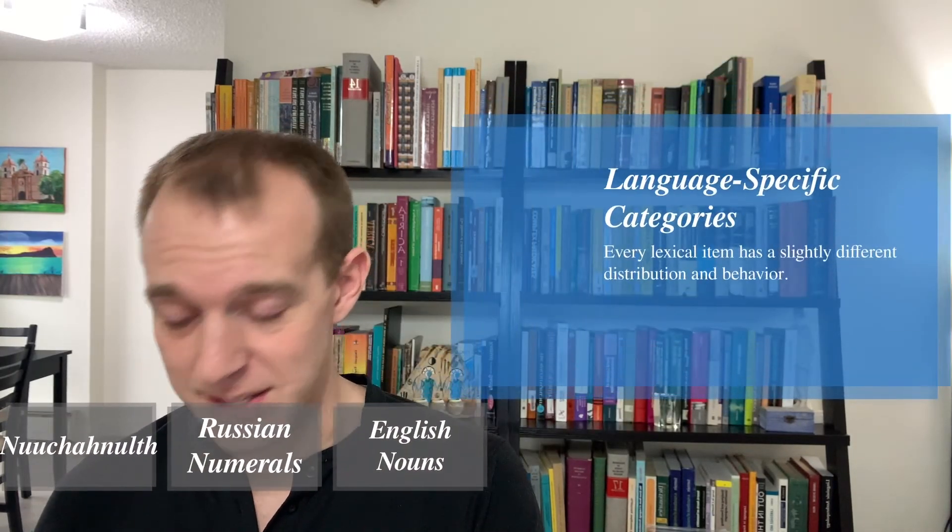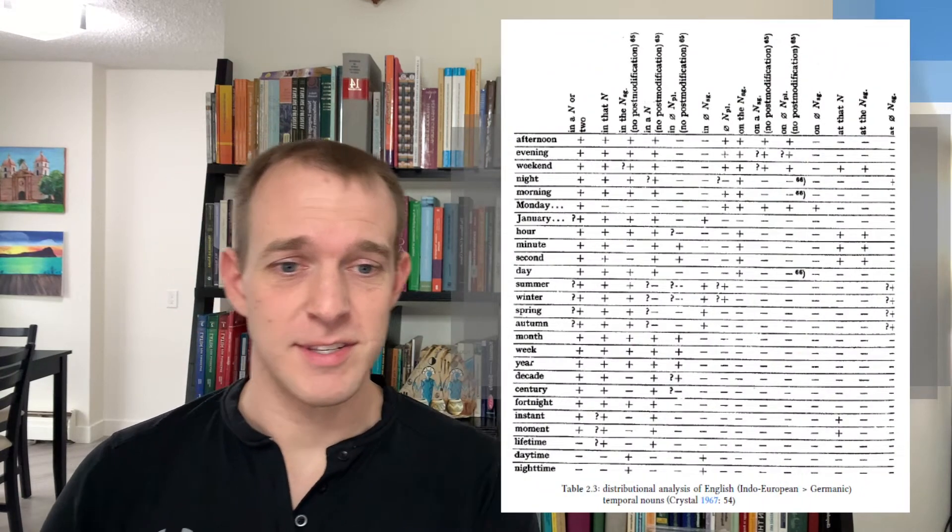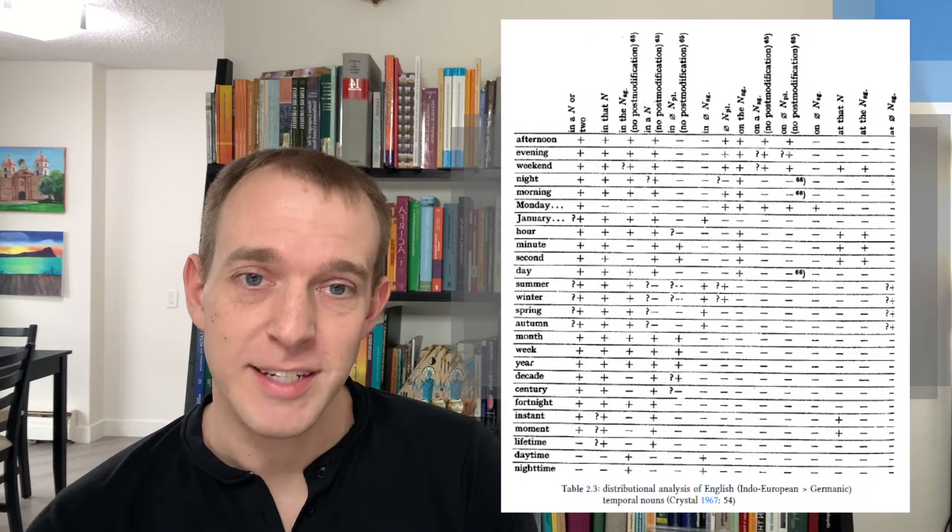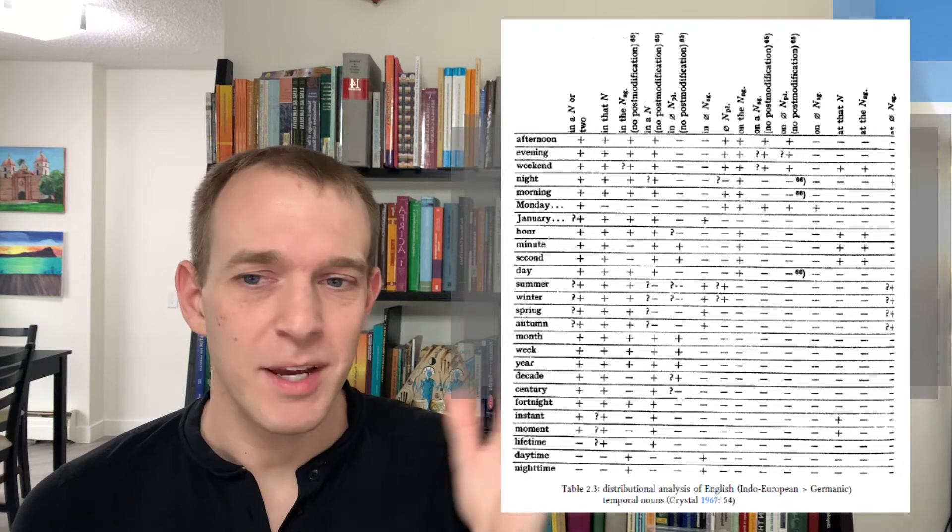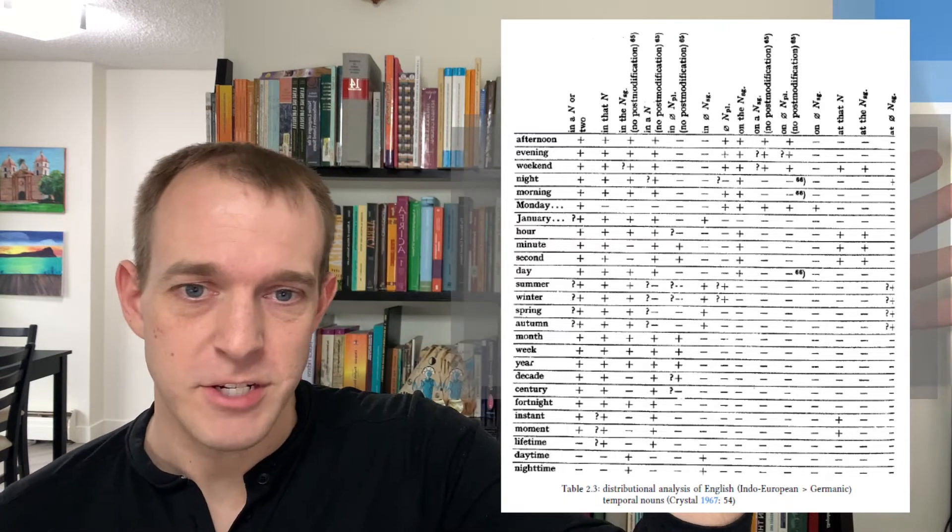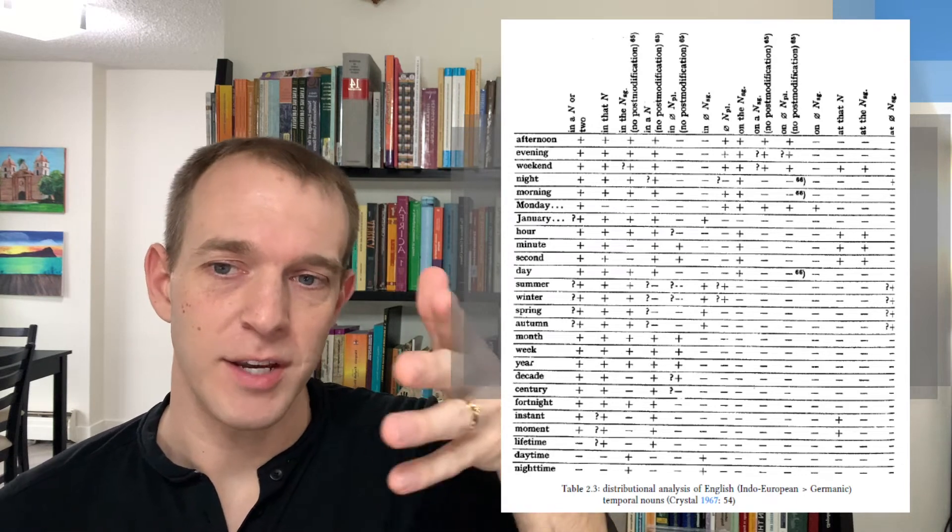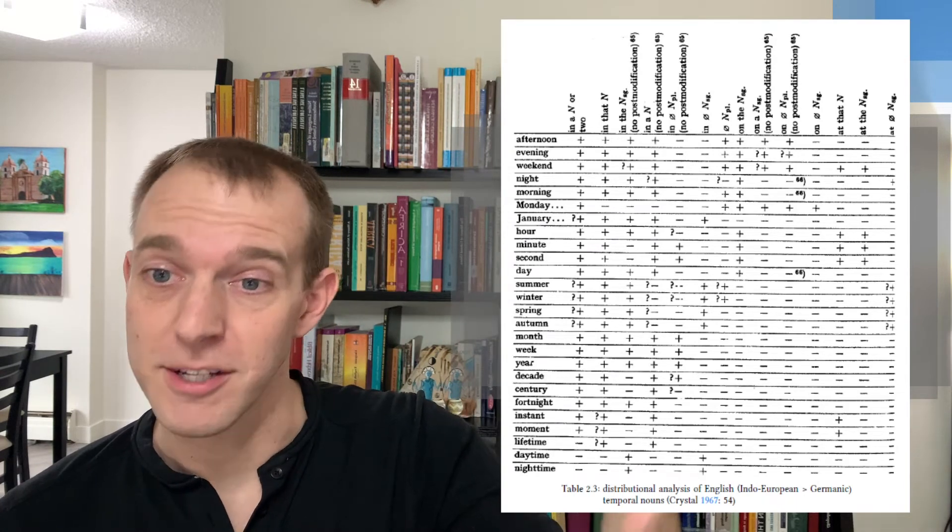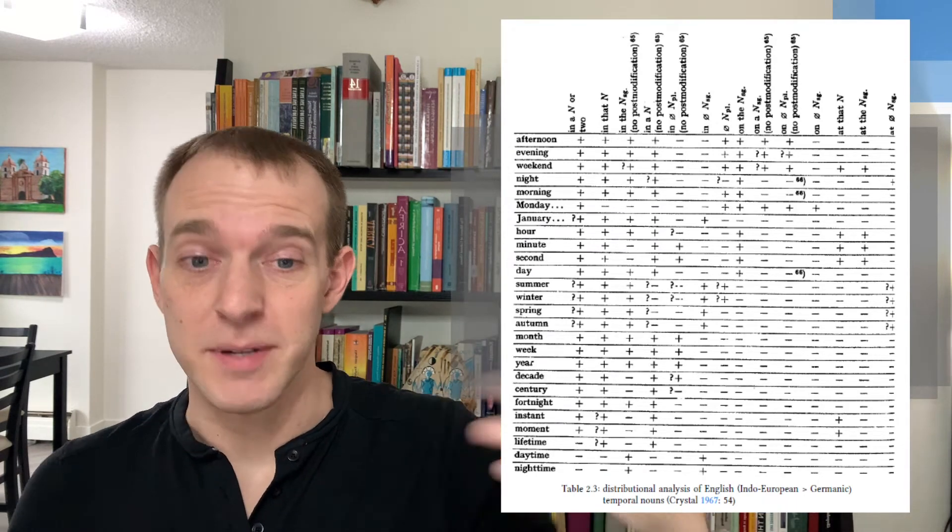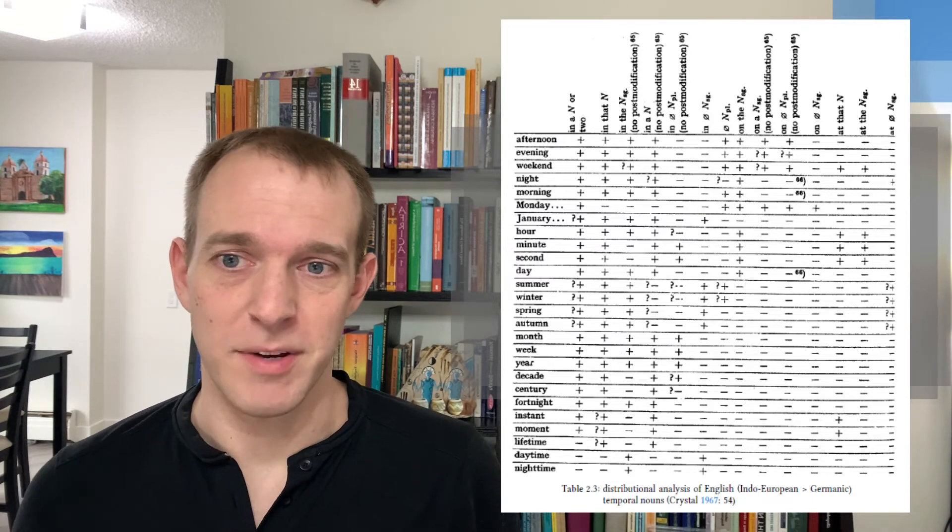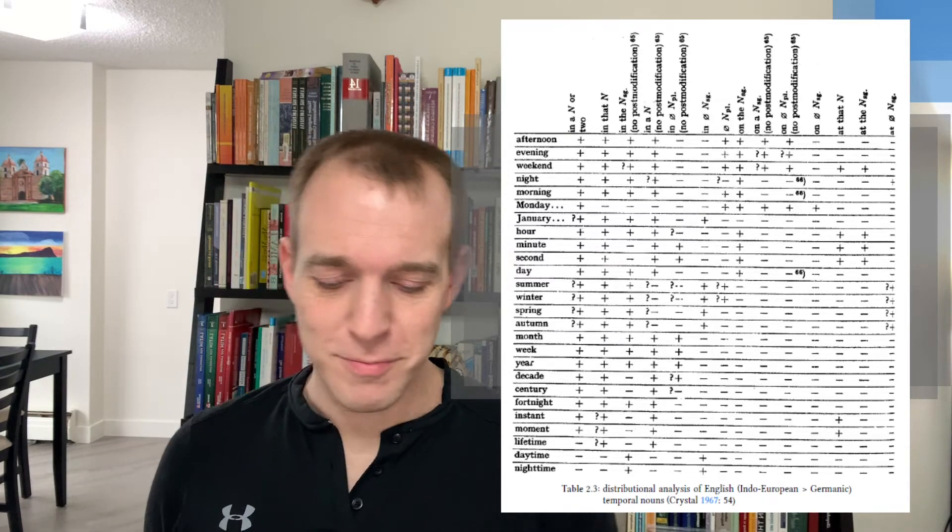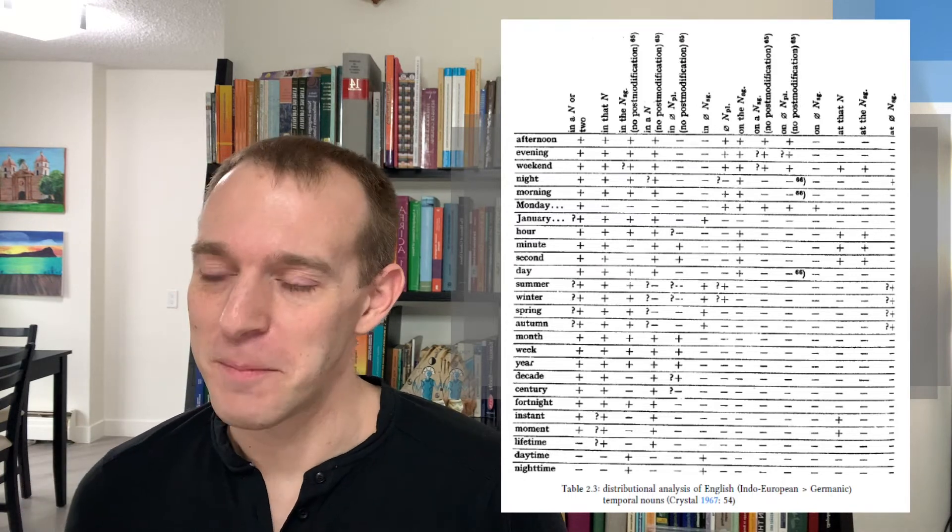clearly delineated categories that are mutually exclusive and have necessary and sufficient conditions to them. Another quick example of this comes from English. This is a study from David Crystal back in 1967. And same kind of thing. On the top are all these features. And on the left are all the words. And you can see how each of these words differs in the particular features it participates in. So it causes that same kind of problem.